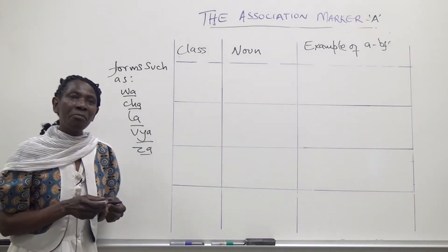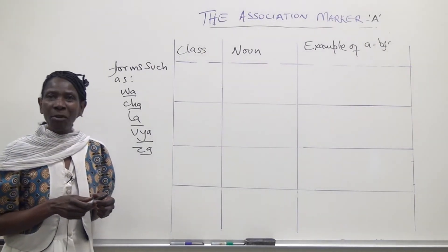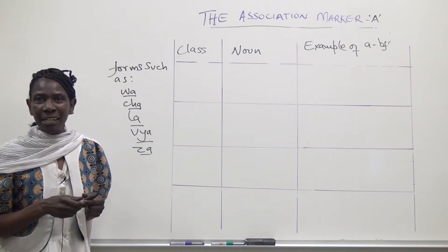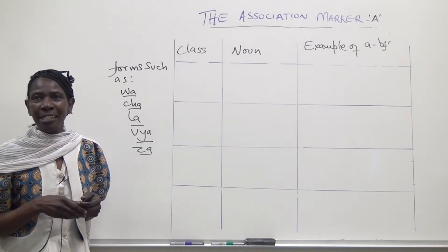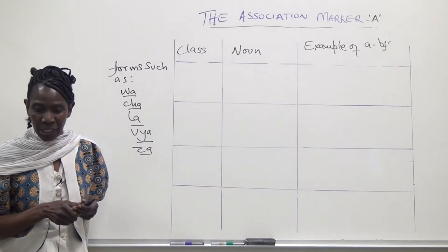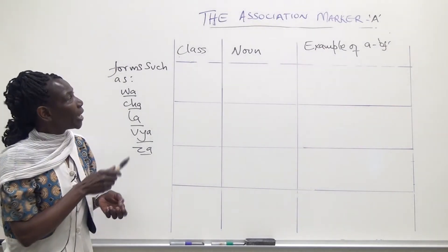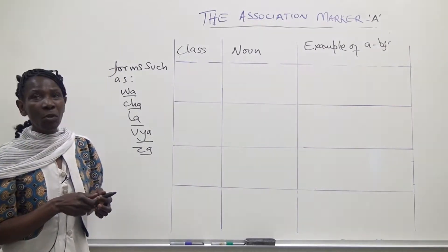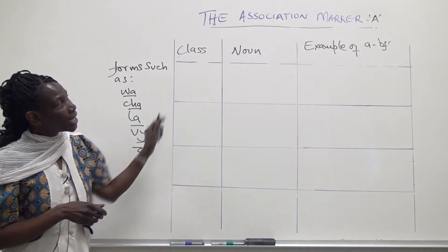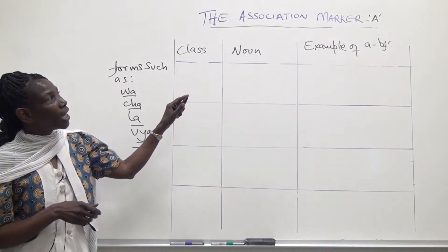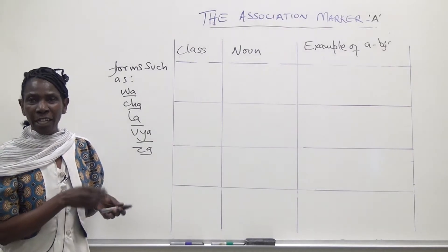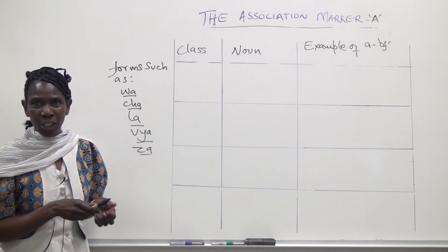The Swahili language has many noun classes, but we are not going to discuss all of them today. We will discuss that later on as we continue with our learning process. Today we are just going to look at a few examples of the noun classes that help us understand how the association marker 'a', or 'of' in English, is used.